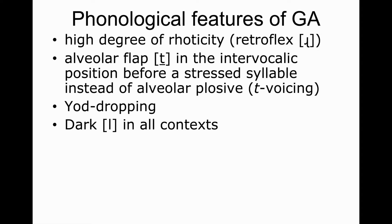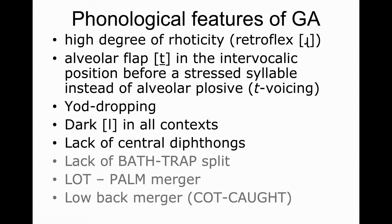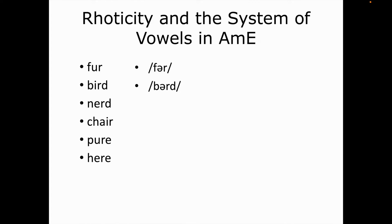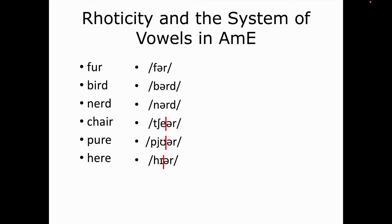Let's consider some of the features that concern vowel sounds. Since American English is rhotic, this feature influences greatly the system of diphthongs. The vowels before R have a special quality known as R-coloring. You can hear it in the following words: fur, bird, nerd, chair, pure, hear. In the last three words, you can expect the so-called central diphthongs — 'air', 'ear' — however, in American English, because of the high degree of rhoticity, you will hear something different: 'chair', 'pure', 'hear'. The glide of the diphthong, the schwa element, merges with the consonant R, and that is why American English lacks central diphthongs.